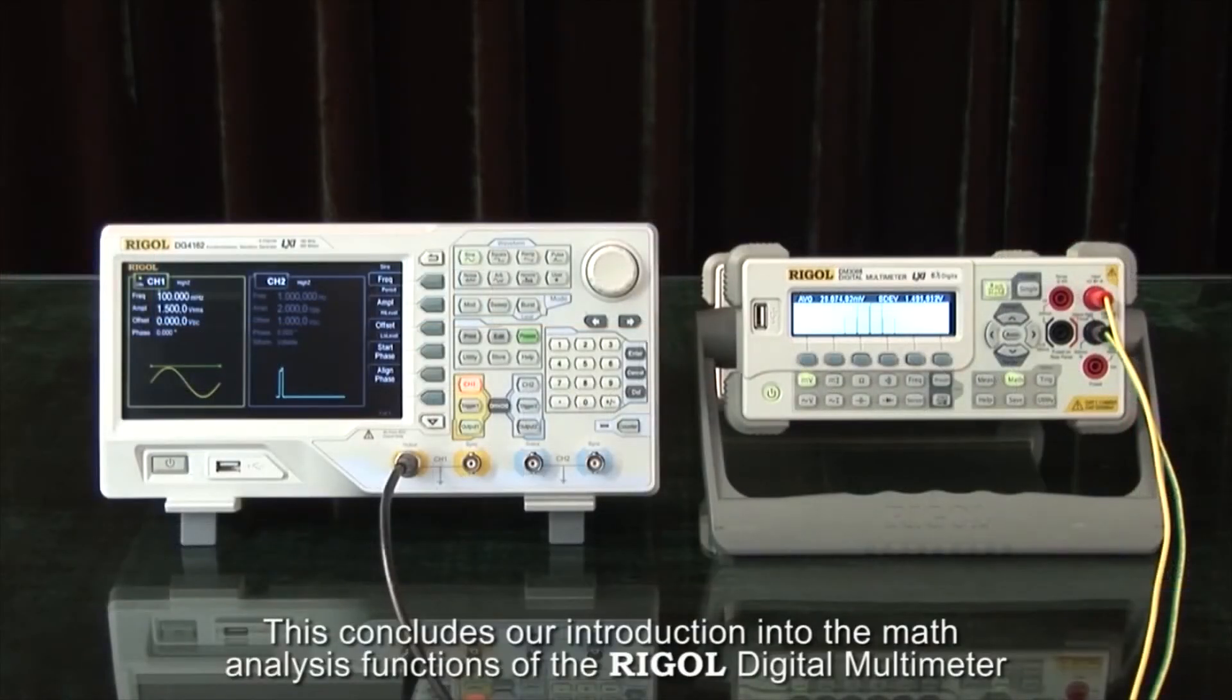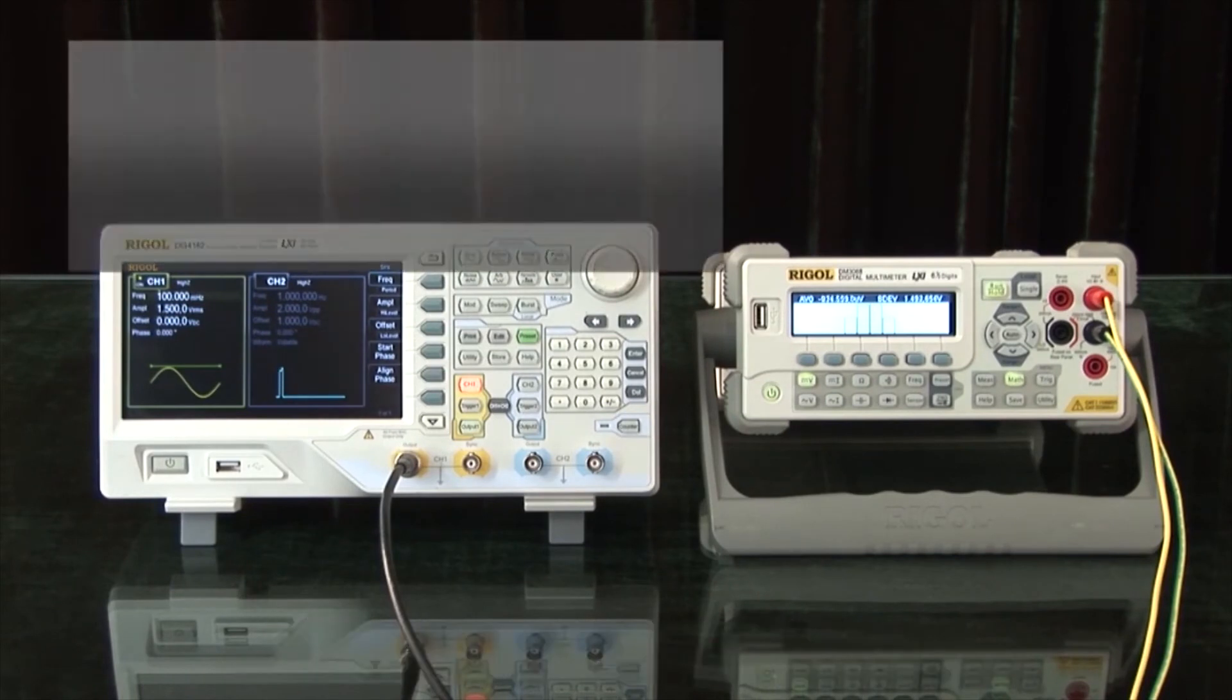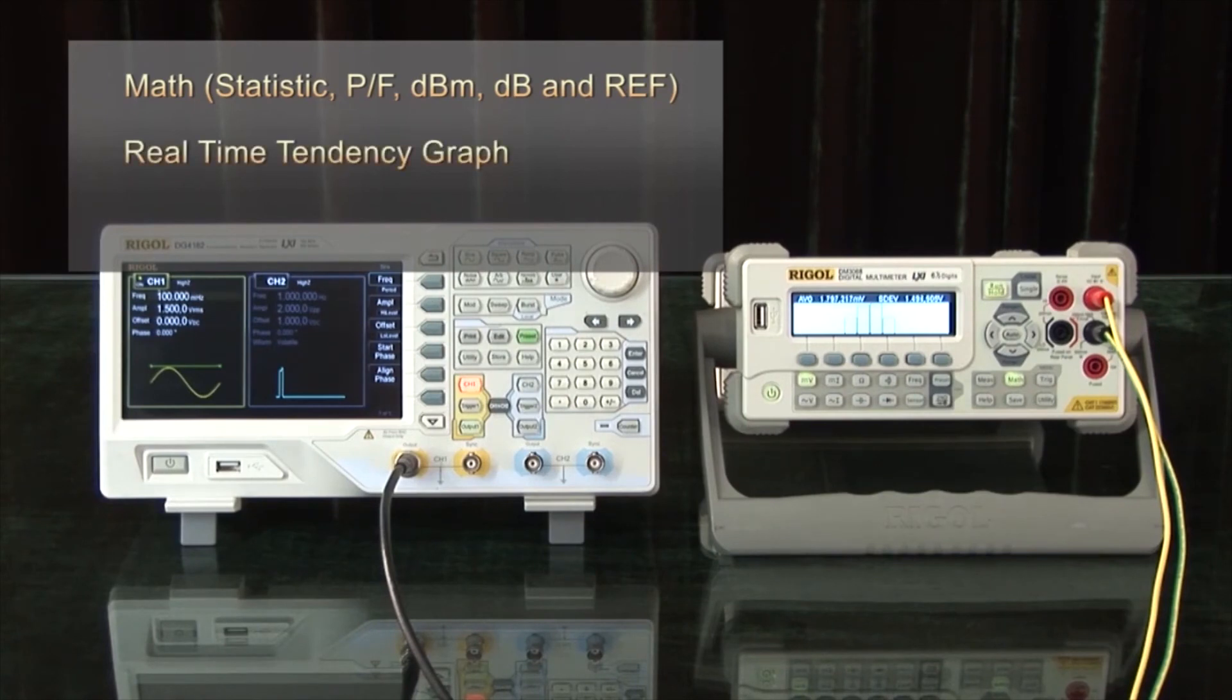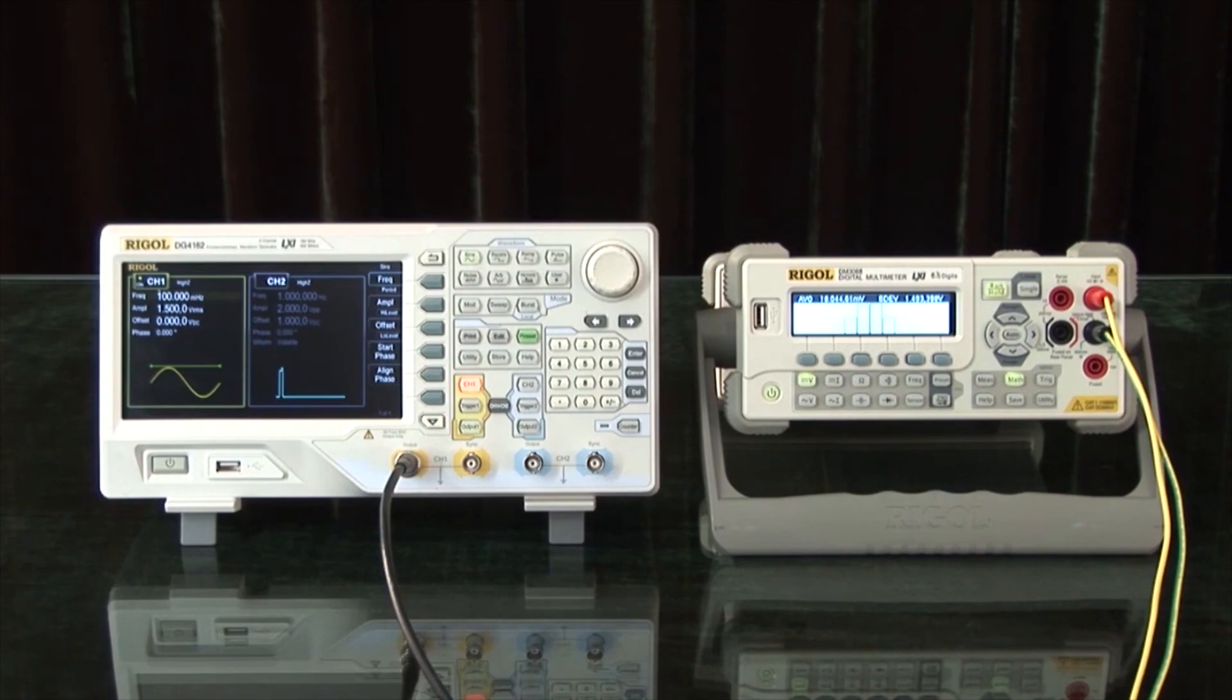This concludes our introduction into the math analysis functions of the Rigol Digital Multimeter. Math analysis functions include statistics, pass-fail, DBM, DB, and reference measurements, real-time tendency graphs, and real-time histogram.